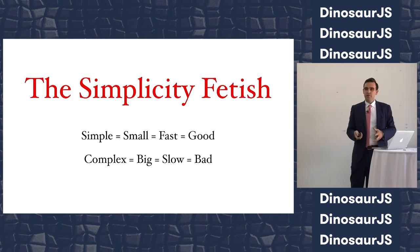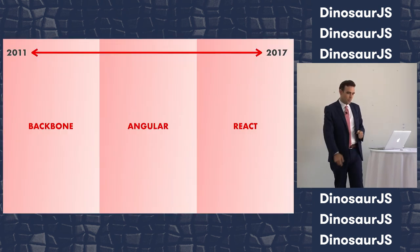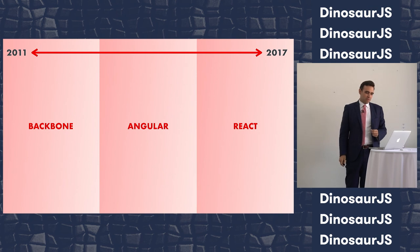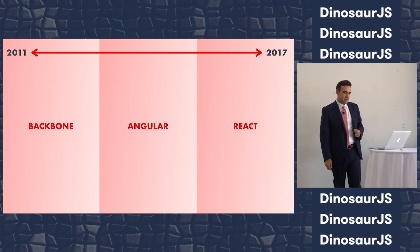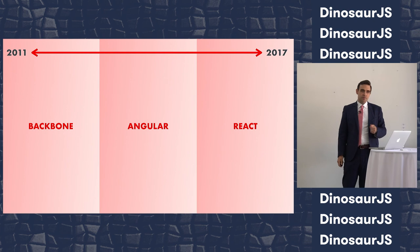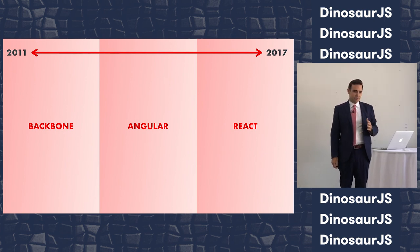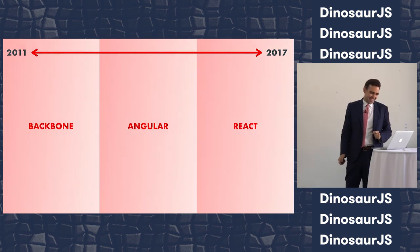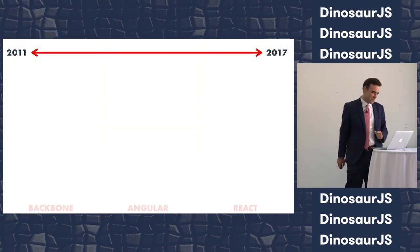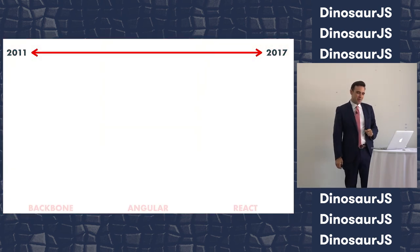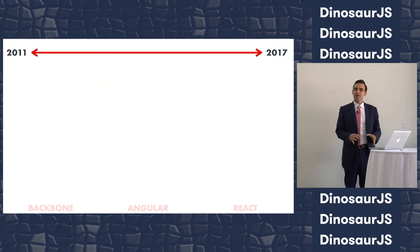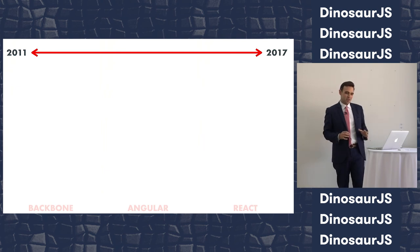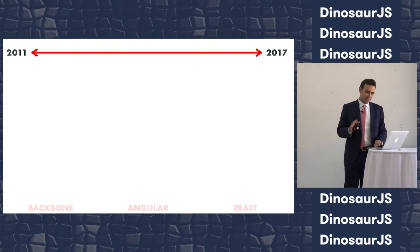More sophistication equals more code equals slower load times. The time period from 2011 to 2017 can roughly be broken up into the Backbone era, the Angular era, and the React era — sometimes referred to as the Ember era. It's easy to become enamored with the simplicity of a tool, and that can lead us to underestimate the complexity of building modern web apps.